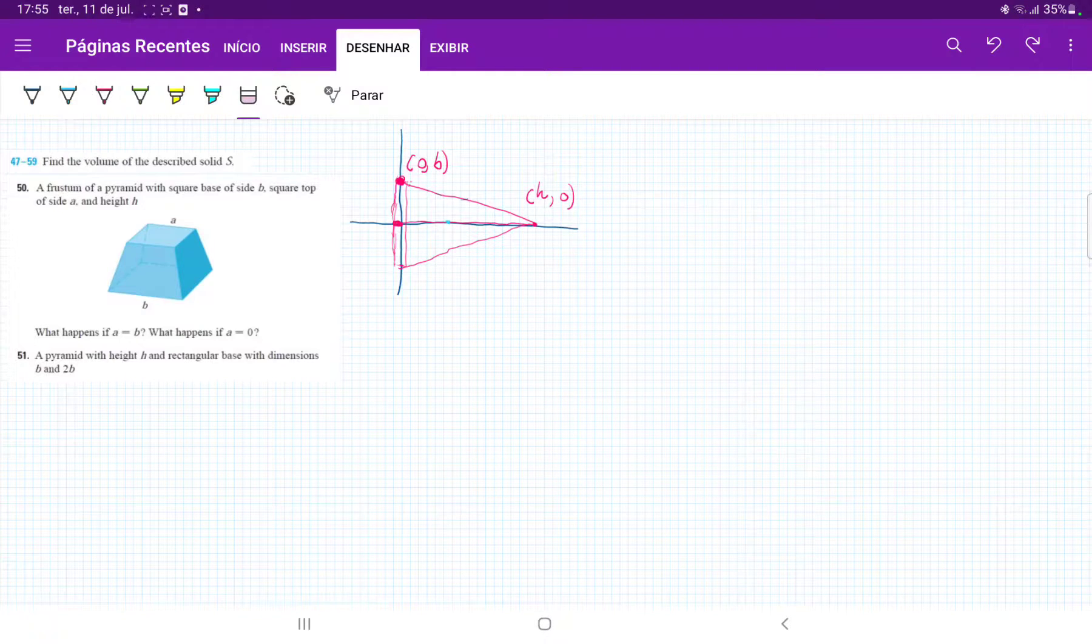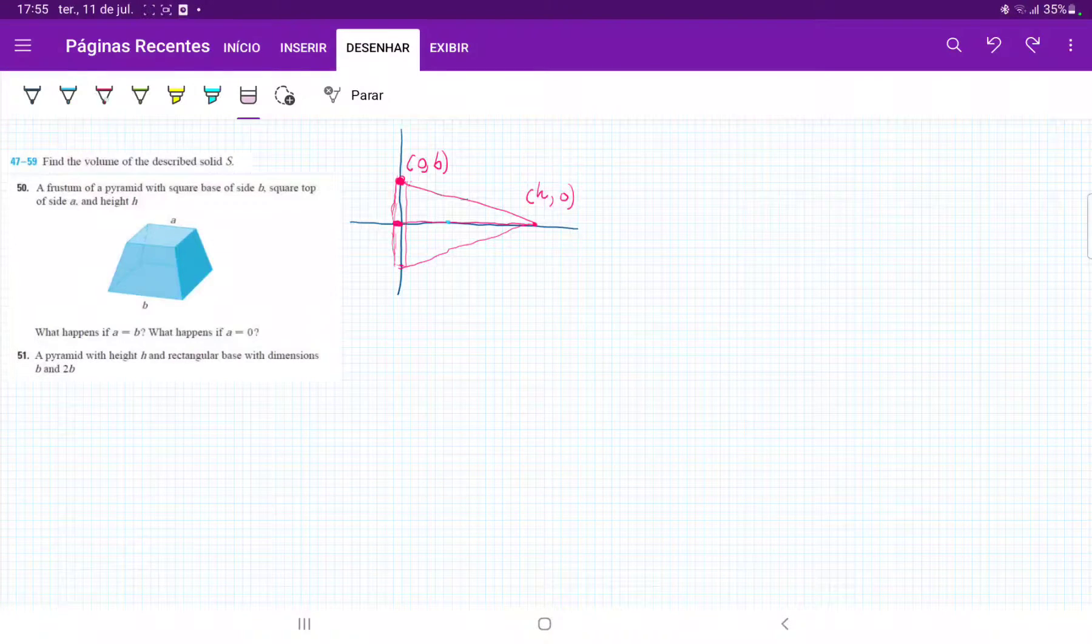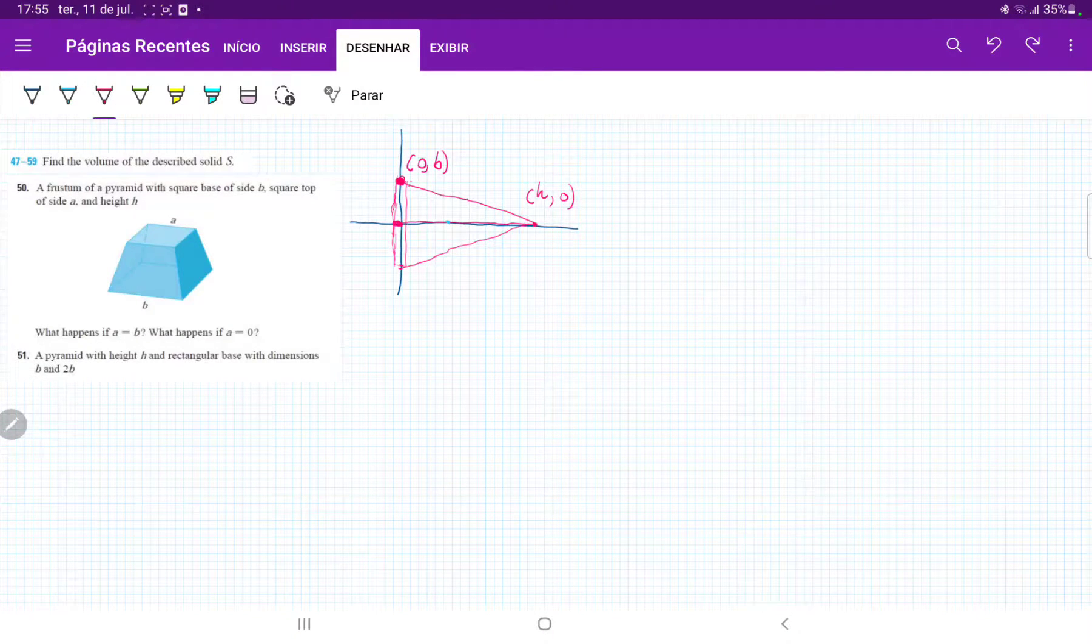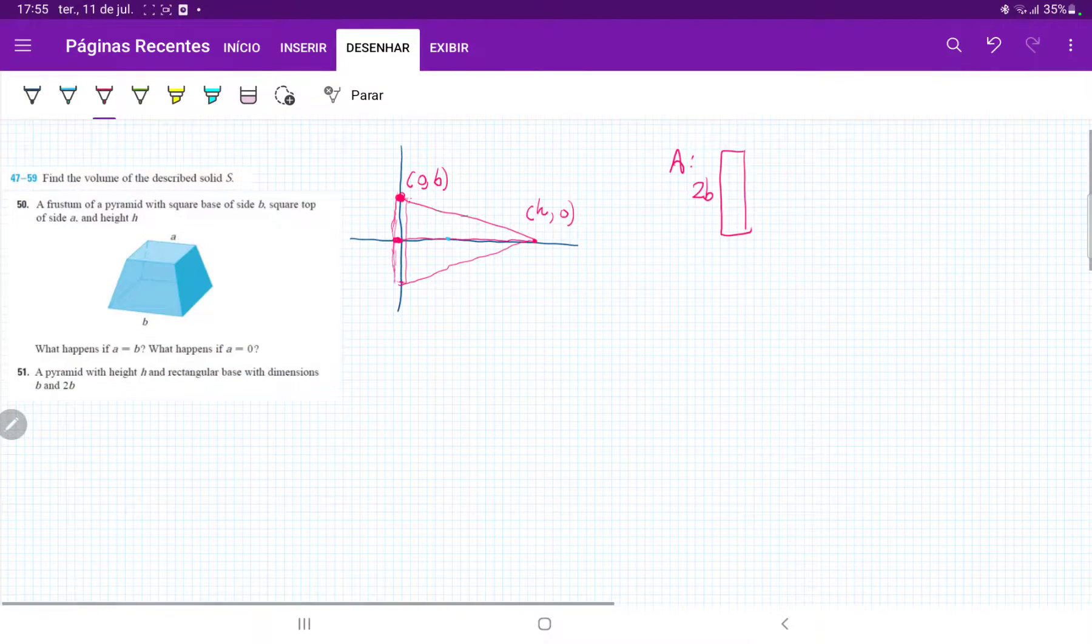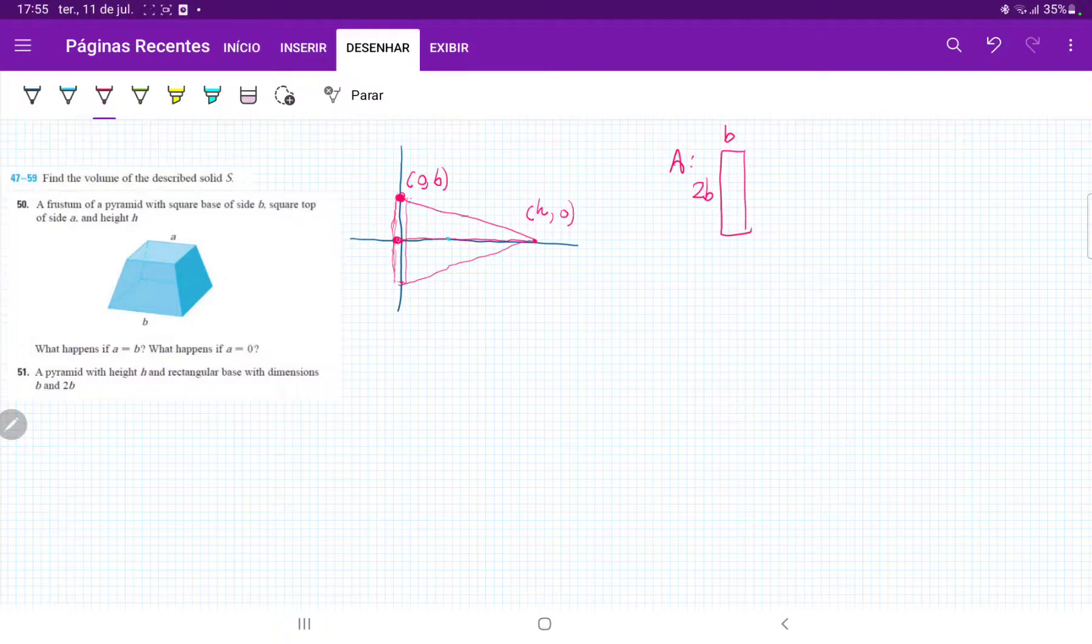So I've gone ahead and I've drawn this pyramid and laid it across the x-axis. Basically what we're doing here is we're taking the area of the base, which has dimensions 2b and b up here, and then we're summing these from 0 all the way out to h